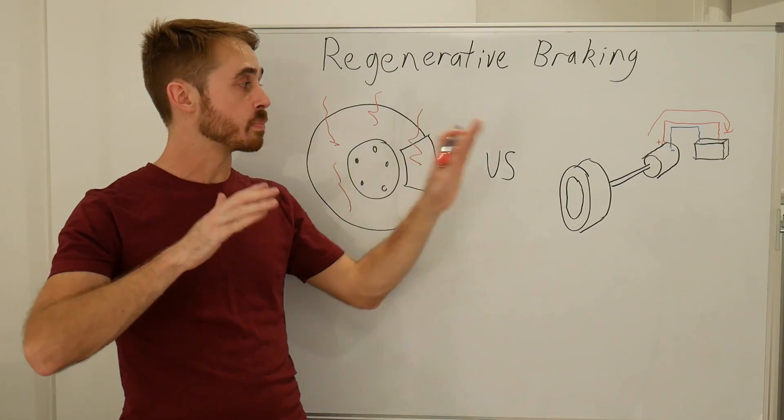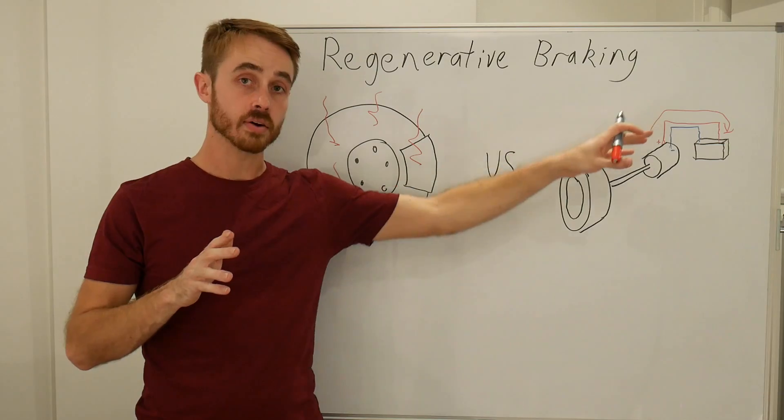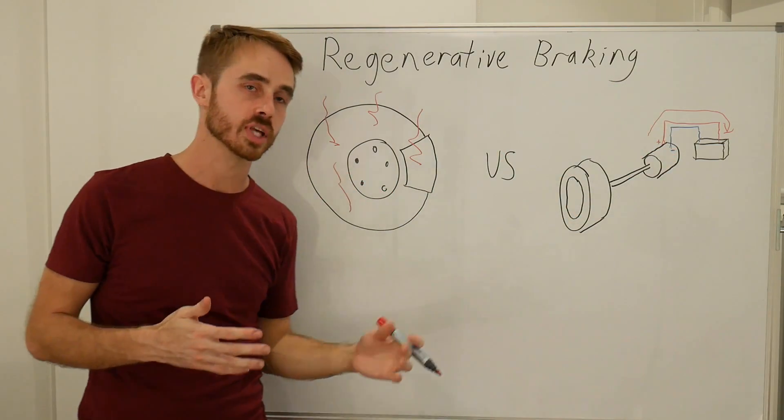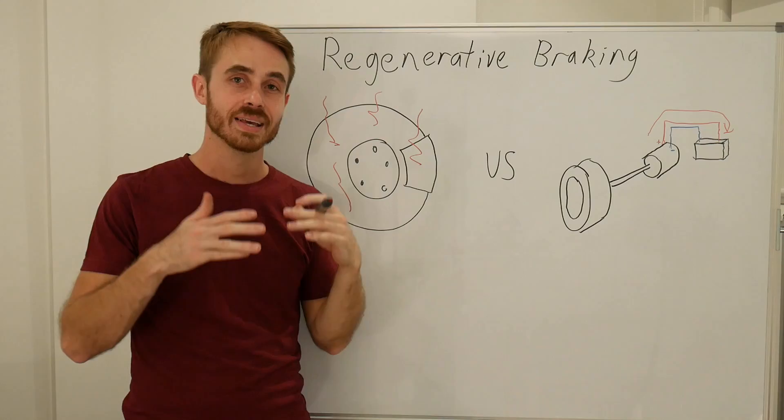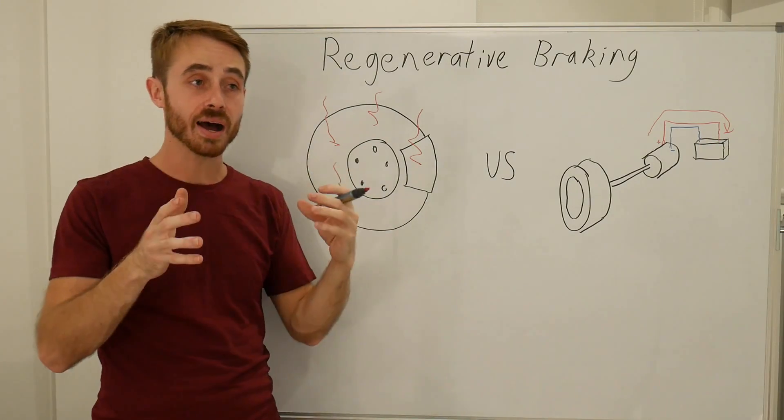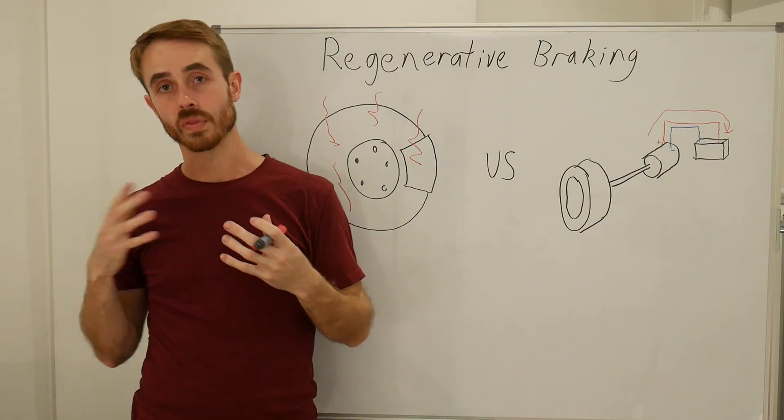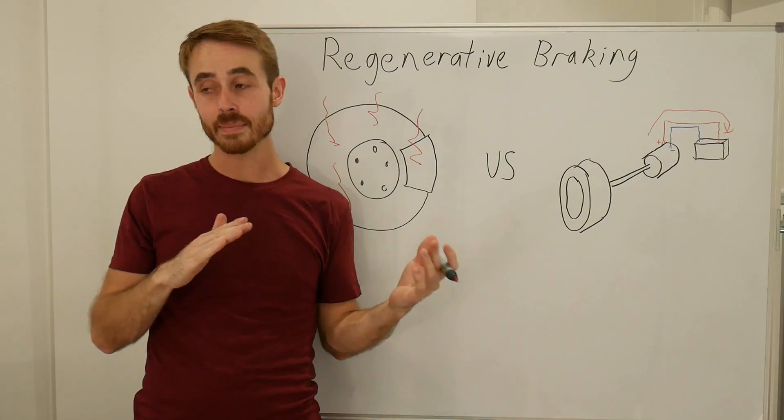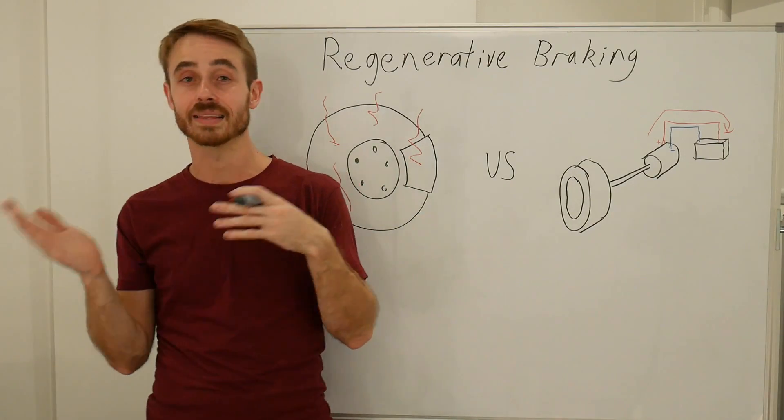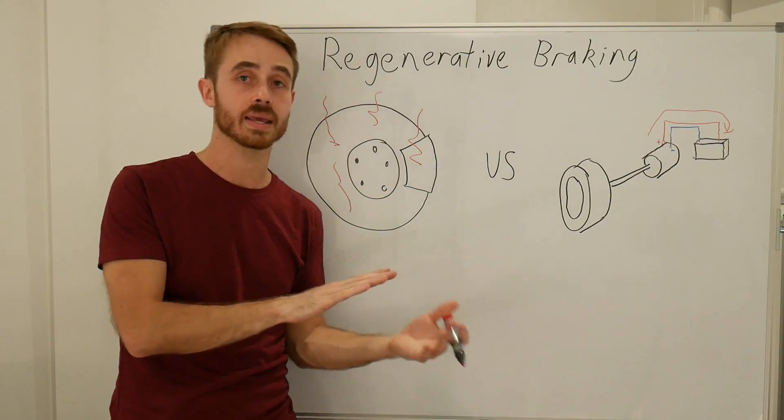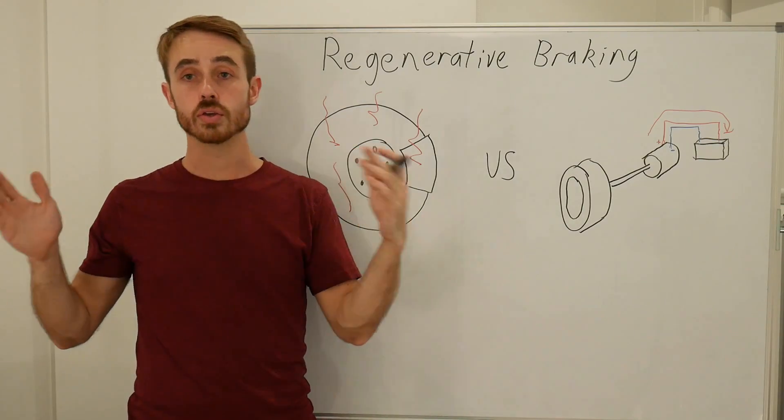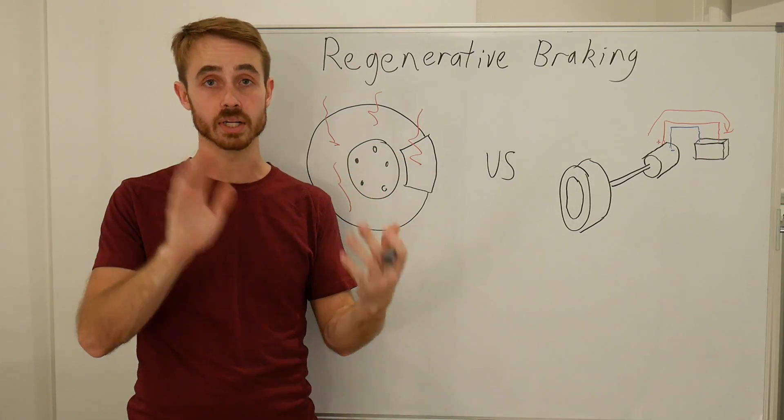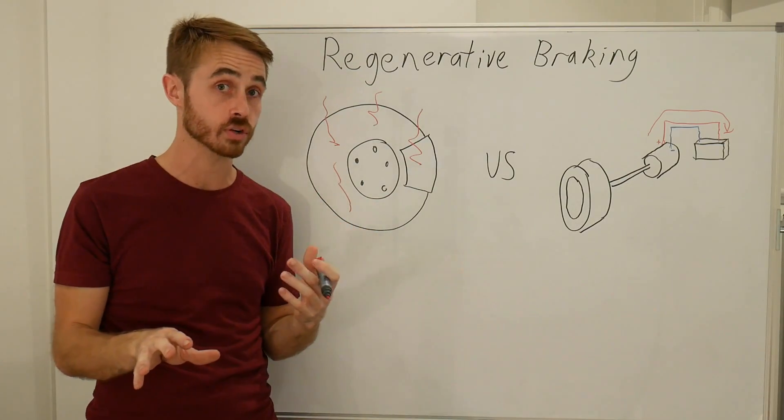For a start, the back current that we're dumping out of our generator when we're regenerative braking has to go somewhere. Now, batteries typically tend to charge at a slower rate than what they can discharge at. Now, that means if you were trying to regenerative brake at exactly the same rate that we were accelerating at under conventional conditions, you would have problems with battery recharging and just having too much current to dump into the battery.